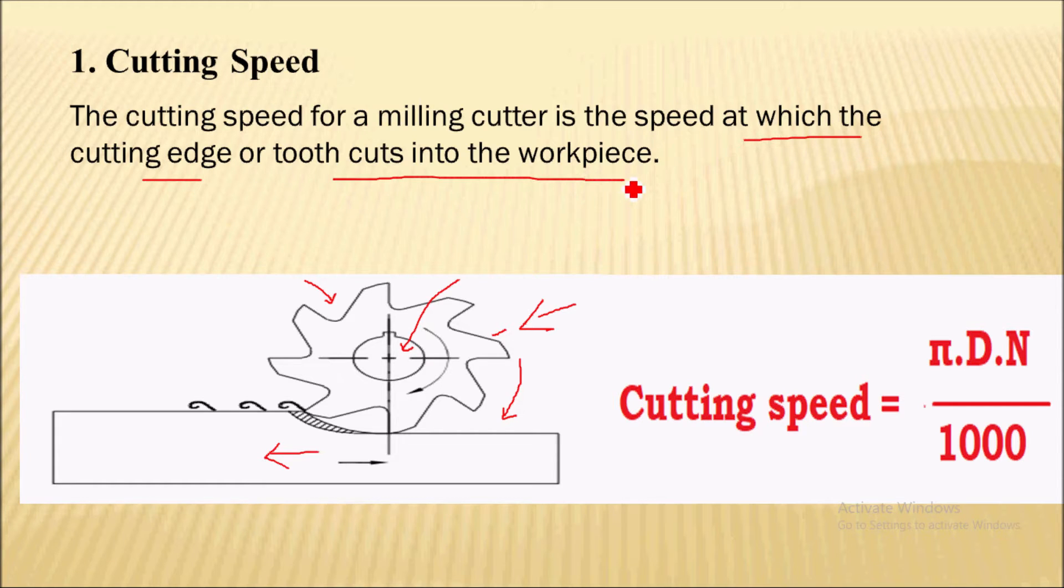It is the speed at which the cutting edge or tooth is going to cut into the workpiece. Simply, we can say the speed at which this cutter will remove the material from workpiece - that speed is the cutting speed for a milling cutter.